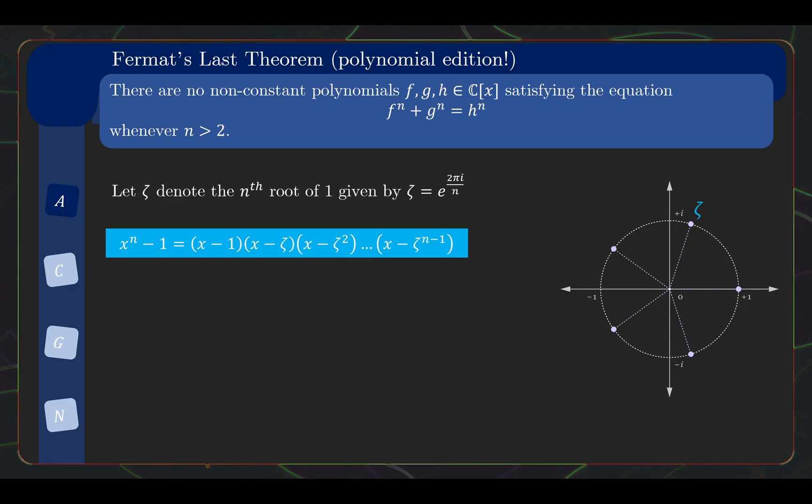Now we observe that 1, ζ, ζ^2 until ζ^(n-1) are all roots of the equation x^n - 1. So the equation x^n - 1 factorizes as shown. And now comes the next step which requires a bit of thought, so watch closely. The magic thing is by complete analogy with our factorization above, h^n - g^n can therefore be factorized as shown.